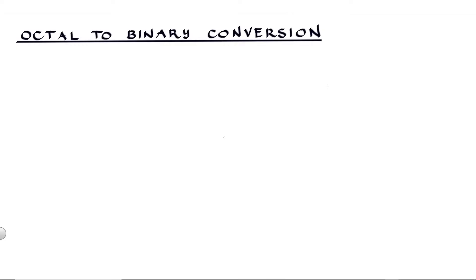Hi, it's Pingpoint. In this video we will talk about how to convert an octal number into a binary number. Let's say we have 67 octal — how are we going to convert this into a binary number?